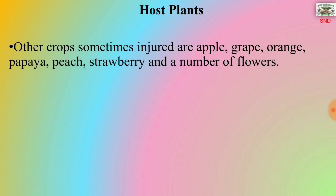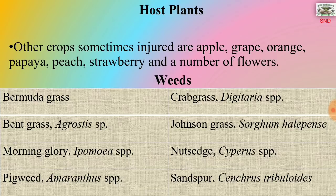Host plants from horticulture include apple, grape, orange, papaya, peach, strawberry and a number of flowers are infested by this pest. The weeds infested include bermuda grass, crab grass, bent grass, johnson's grass, morning glory, nutsedge, pigweed and sand spur.